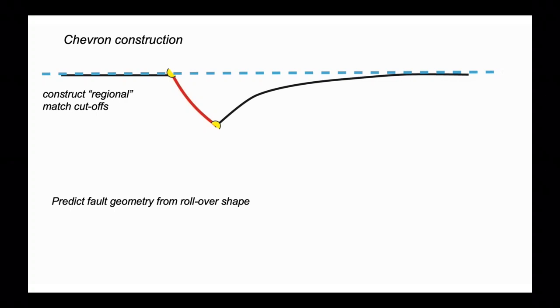First thing to do is construct the regional, in other words the elevation and orientation of our stratigraphic marker horizon on a long wavelength away from the fault. We also want to match the terminations of this marker horizon against the fault plane, shown by those yellow semicircles.